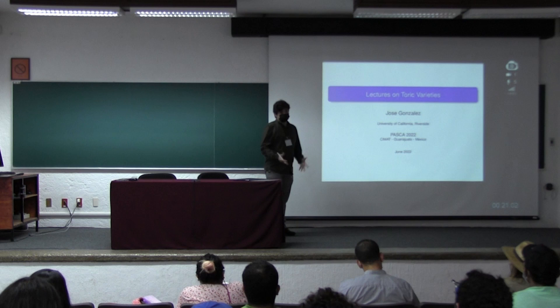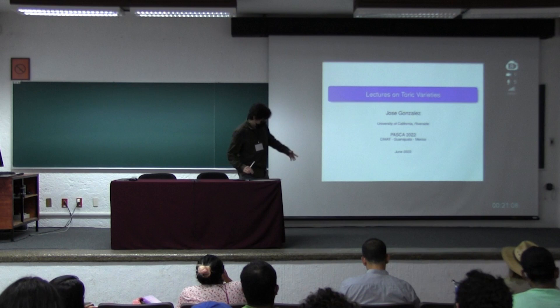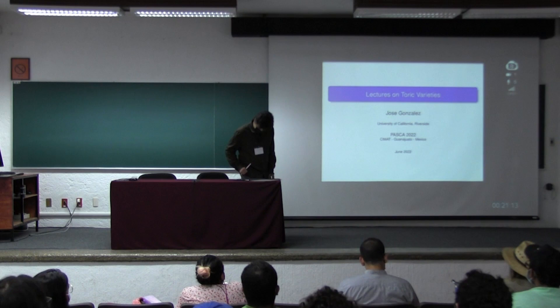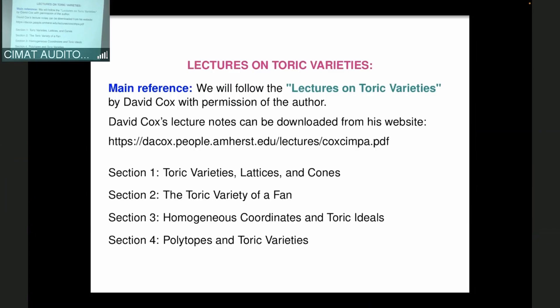The title is Lectures on Toric Varieties. My name is Jose Gonzalez — you can just call me Jose. The main reference for the lectures is the text of the same title, Lectures on Toric Varieties by David Cox. It's a very nice source because the examples are very carefully chosen; later examples connect to the earlier ones. These notes are very well written and we are going to follow those closely.